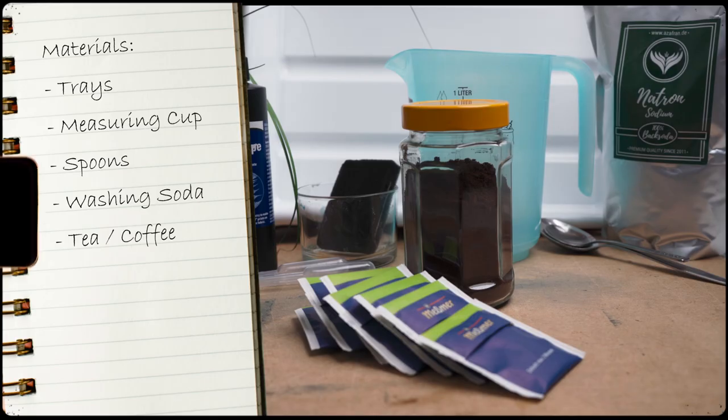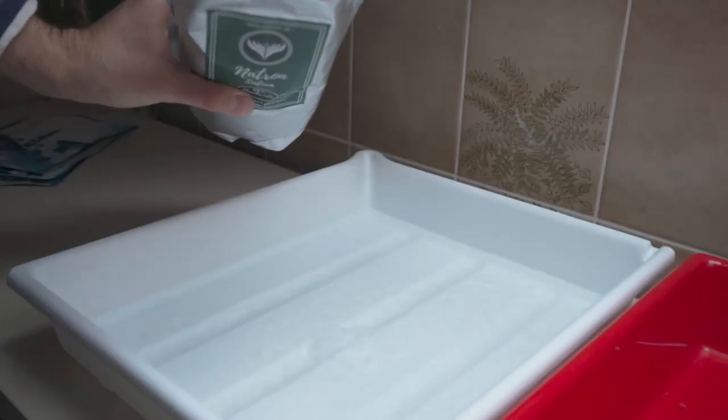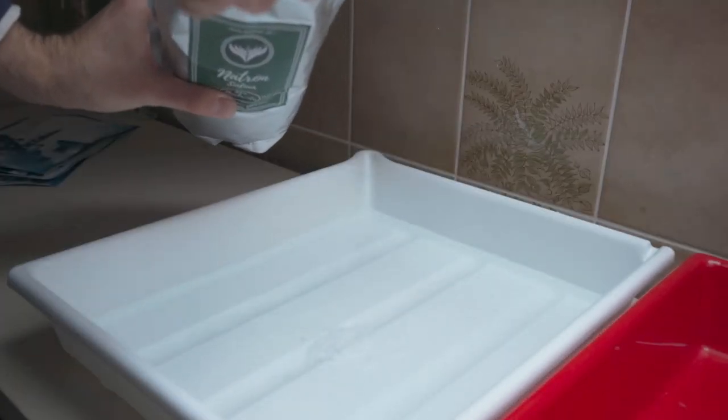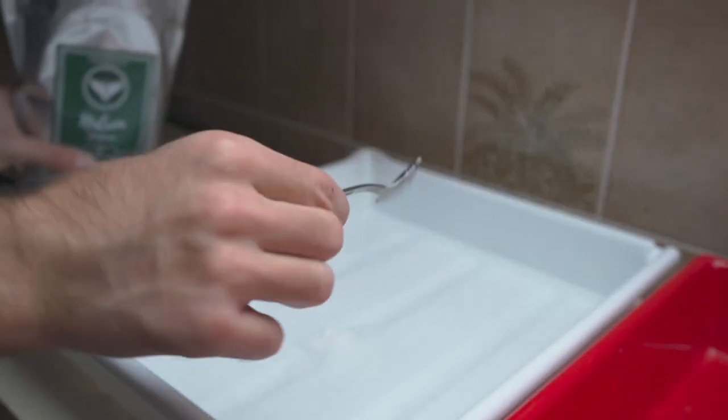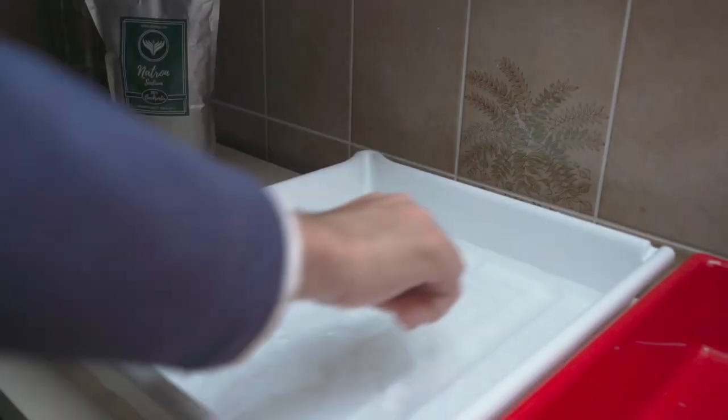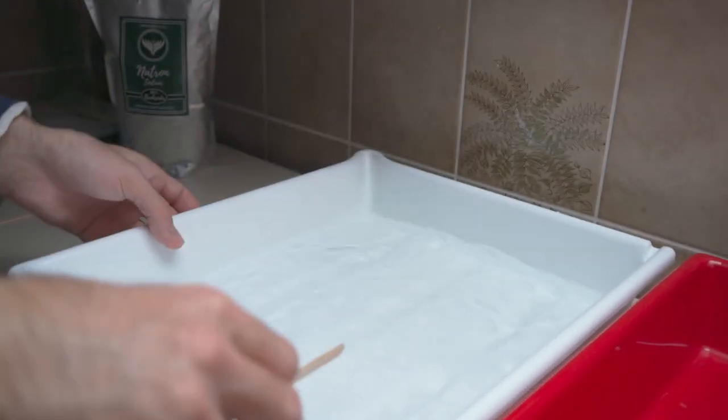Now that I obtained all the necessary materials it is time to prepare the toning baths. I'm going to fill the first developing tray with a solution of washing soda. To do that I put three teaspoons of sodium into one liter of water. After mixing everything carefully it's time for the next bath.